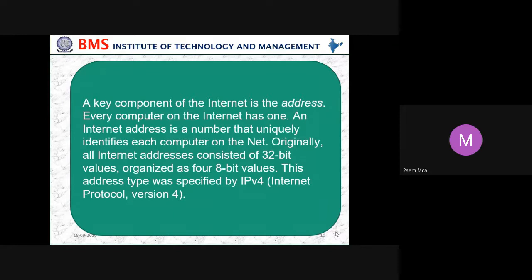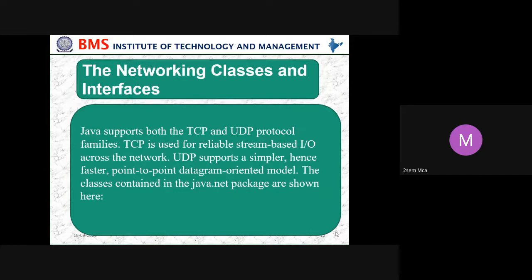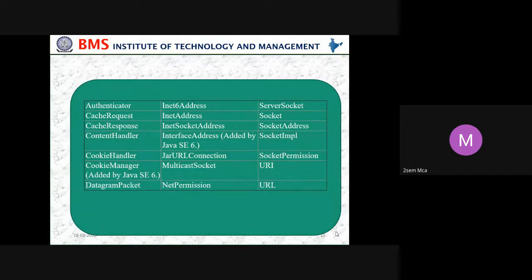A key component here is IPv4 or IPv6. IPv4 is the older version of Internet Protocol, considering internet addresses only for 32 bits. Whereas IPv6 is the next version, using 128-bit addresses organized in 16-bit chunks. So IPv6 is larger than IPv4. There are many inbuilt classes and interfaces available in the package called networking, similar to how math.h has square root and other methods available.